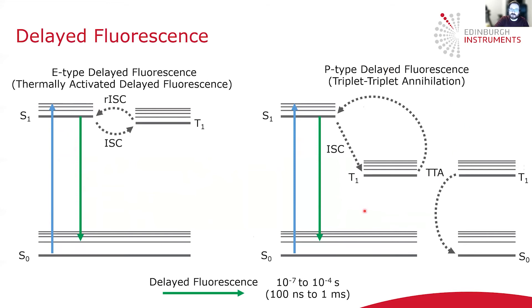The other type of delayed fluorescence is known as P-type delayed fluorescence, or triplet triplet annihilation. This requires at least two molecules, it's a bimolecular process.